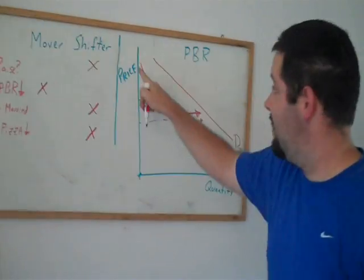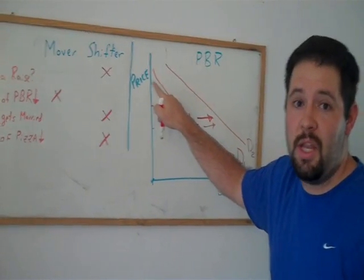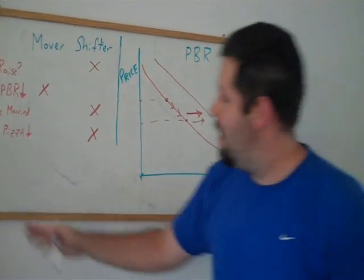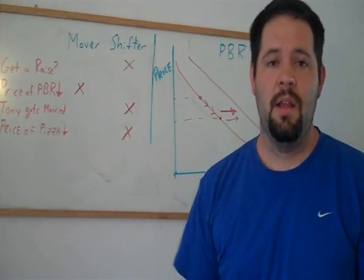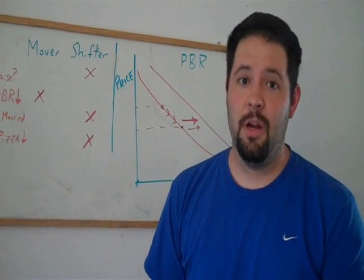Price is on this axis, but it is not price of pizza. It is price of beer. It is price of another good. This is a complement to beer. And that is where we can get a shift in the demand curve.